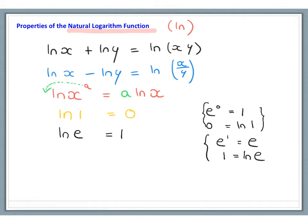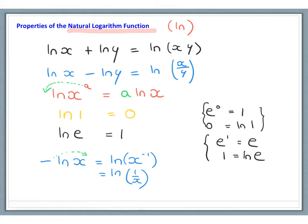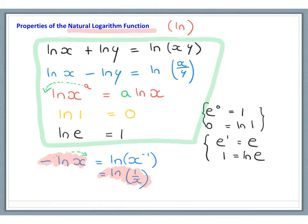It's also useful to remember that negative ln of x is the same as ln of x to the power of minus 1, because we can bring the power to the front. And x to the minus 1 is 1 over x. So all of the usual laws of logarithms are followed by the natural log, the ln function.